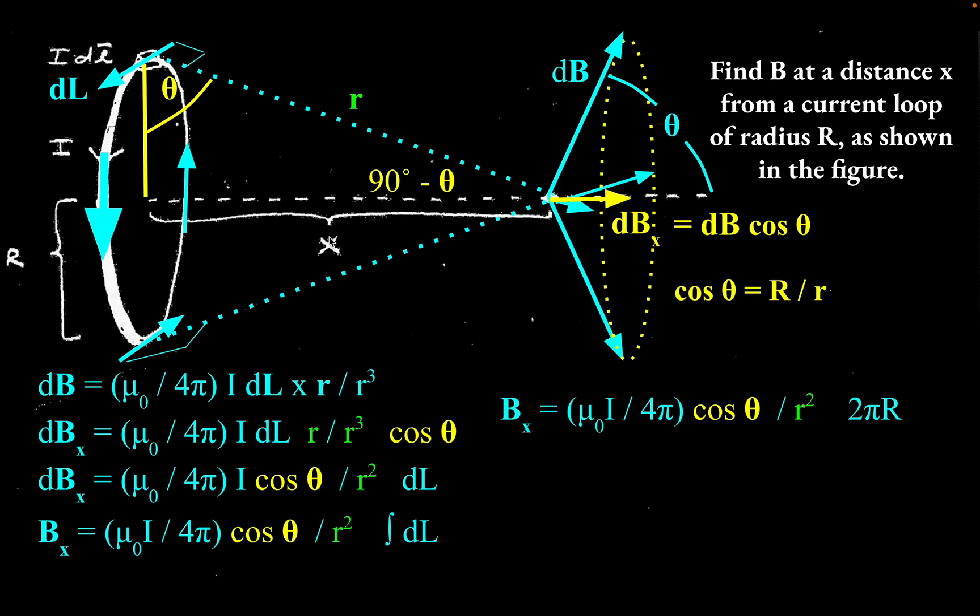We can just make that substitution now. So cosine theta, we can put big R over little r. What that does is that introduces a big R here and that pumps up the exponent on the r squared in the base up to r cubed, little r cubed.